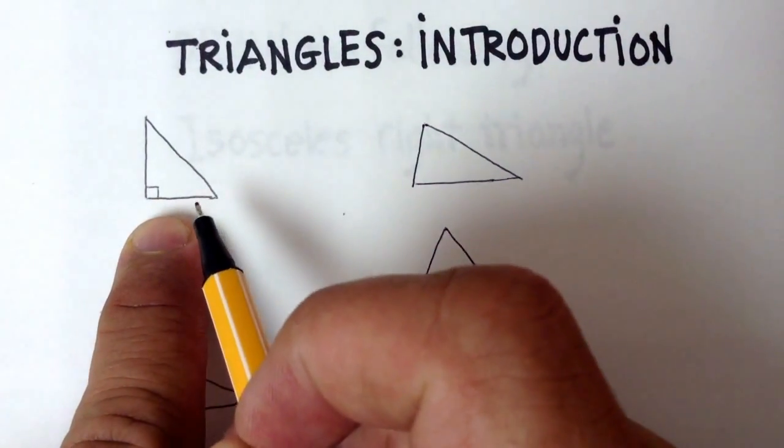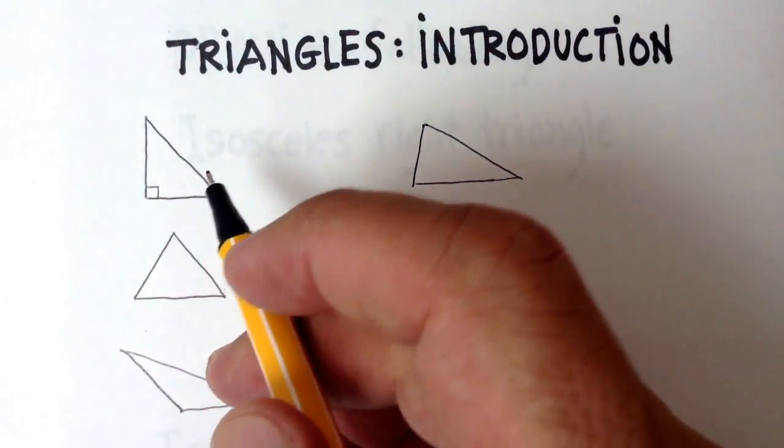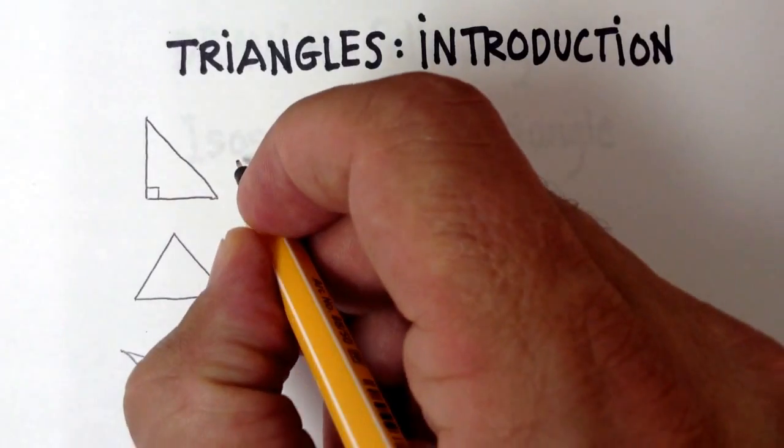In the upper left-hand corner, we have what is called an acute right angle. Well, actually, let's just call this a right triangle.